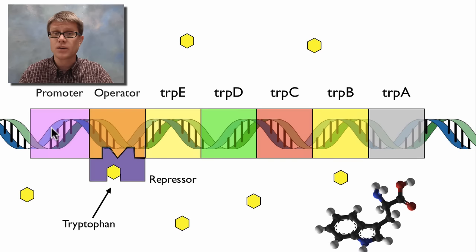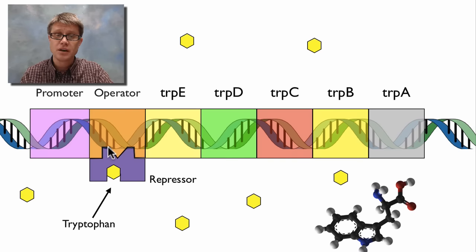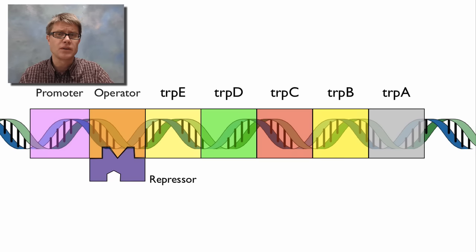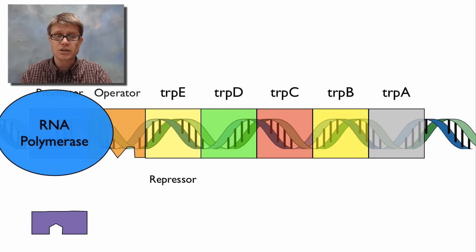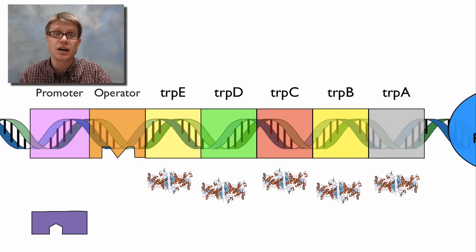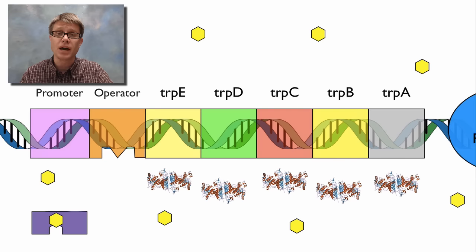We get tryptophan from poultry and milk — there are high levels of it there. But if a bacterium doesn't have tryptophan, there are a number of different genes required to make it, so they can synthesize their own. If tryptophan is present — represented here as yellow hexagons — tryptophan fits inside the repressor and changes its shape so it fits in the operator. If we have a bunch of tryptophan, we don't want to make more, so the repressor sets the operator to the off position. But if tryptophan goes away, the repressor changes shape, RNA polymerase can grab on, drive down the operon, and make all the genes needed to create more tryptophan. It's a great feedback loop.